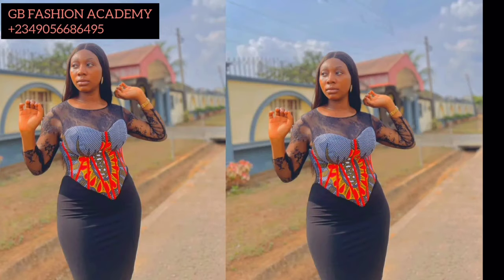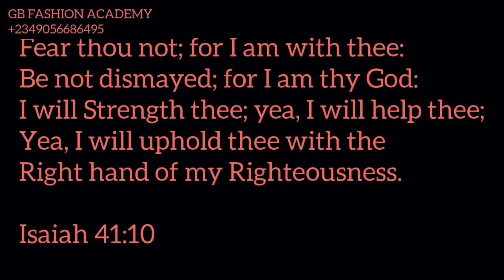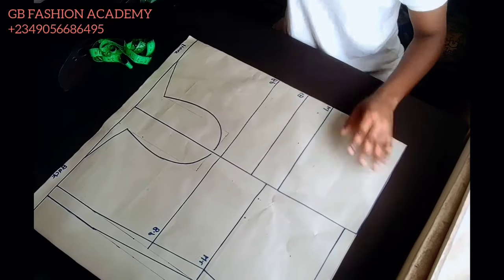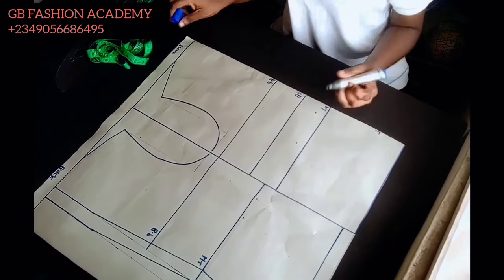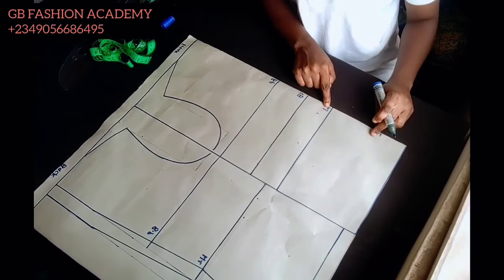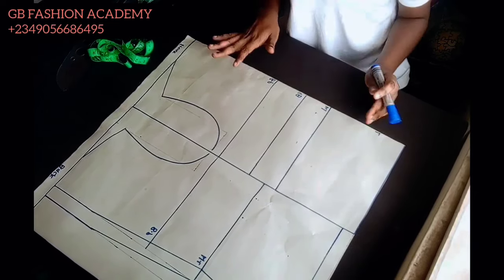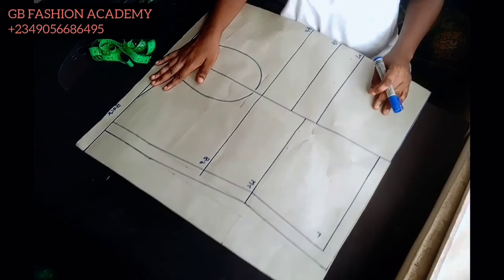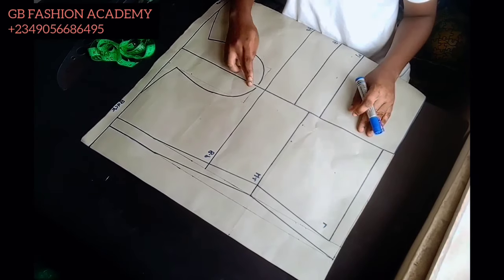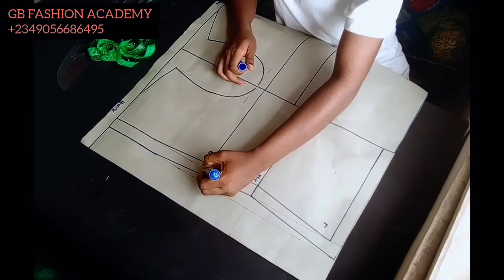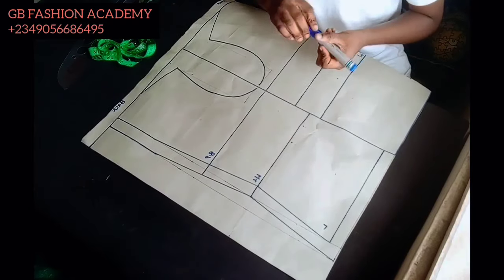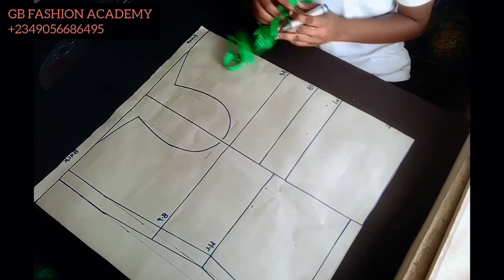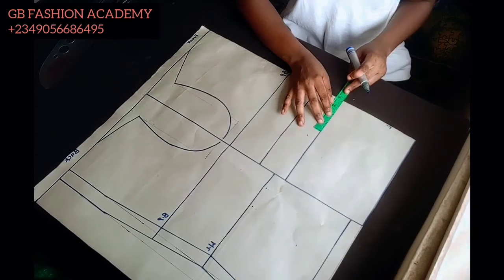Let's get started. First, you'll be needing your basic bodice block. As you can see I have my basic bodice block. To draft a corset with yoke you must know how to draft a basic bodice block. I have my front and back basic bodice block. On the front I have my bust point, underbust and waistline, and on the back I have my bust point, back waistline and the hem.